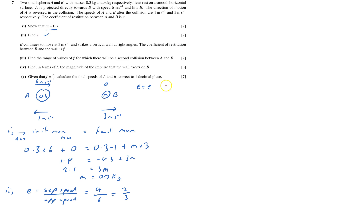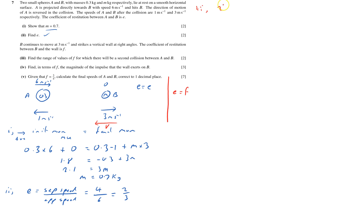Now for part three: B hits a wall where the coefficient of restitution is F — note this is different from E. B approaches the wall at 3 m/s, bounces back, and a second collision with A only occurs if B's rebound speed V is greater than 1 m/s (A's current speed).